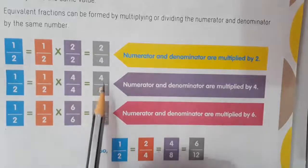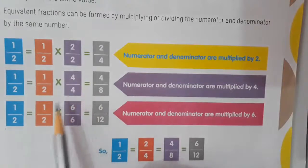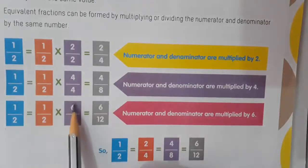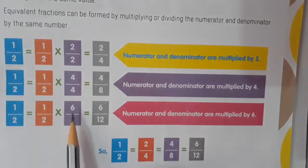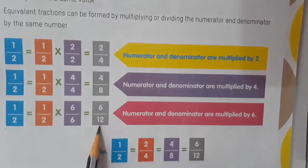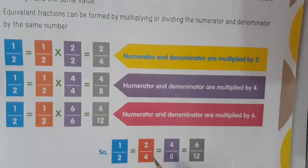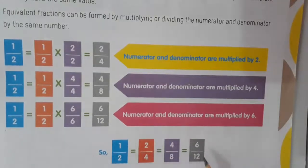Numerator and denominator are multiplied by the same number. So 1 times 4 is 4, and 2 times 4 is 8, giving 4 by 8. Next, numerator and denominator are multiplied by 6, giving 6 by 12. So 1 by 2 equals 2 by 4 equals 4 by 8 equals 6 by 12 — these are all equivalent fractions.